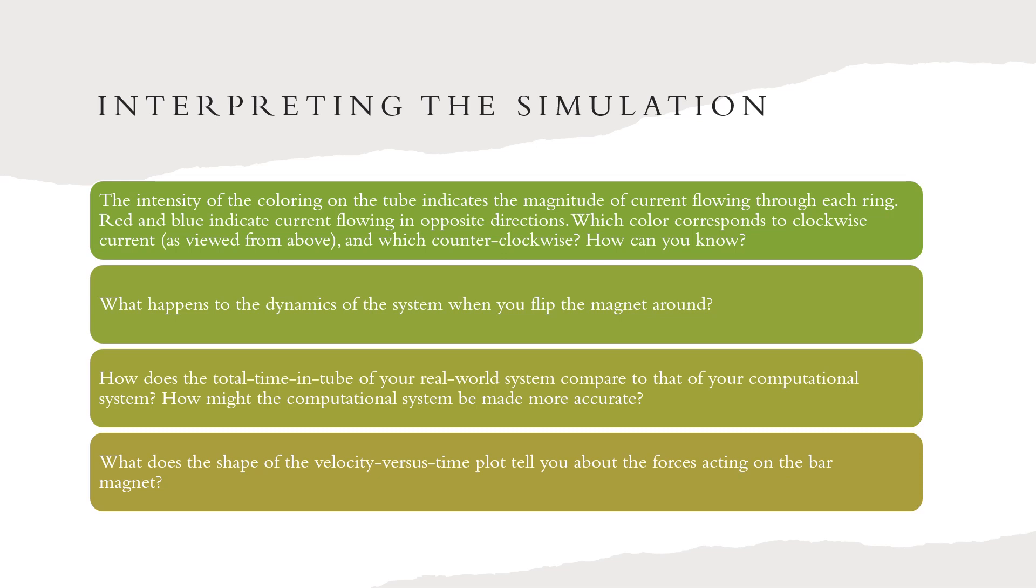Interpreting the simulation. The intensity of color in the tube indicates the magnitude of current flowing through each spring. Red and blue indicate current flowing in opposite directions. Which color corresponds to clockwise current and which counterclockwise? How can you know? The blue color corresponds to the clockwise direction while the red color is the counterclockwise direction. This is known from Lenz's law and the right hand rule.